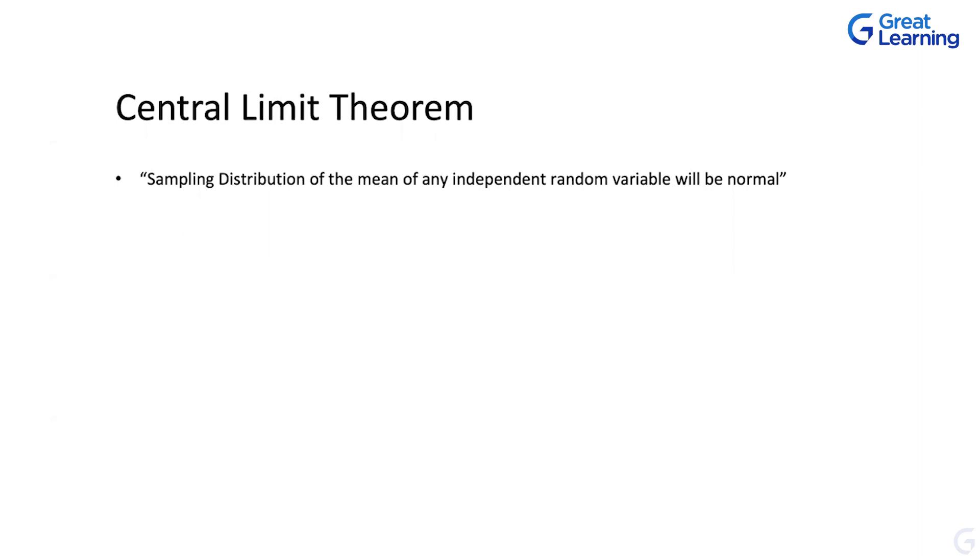So that distribution of the mean of that sampling distribution will be normal. And as I said, whether your sampling distribution is normal or not, we don't know. But the distribution of the mean definitely will be normal. That's what Central Limit Theorem says. And this applies to both discrete and continuous distributions.